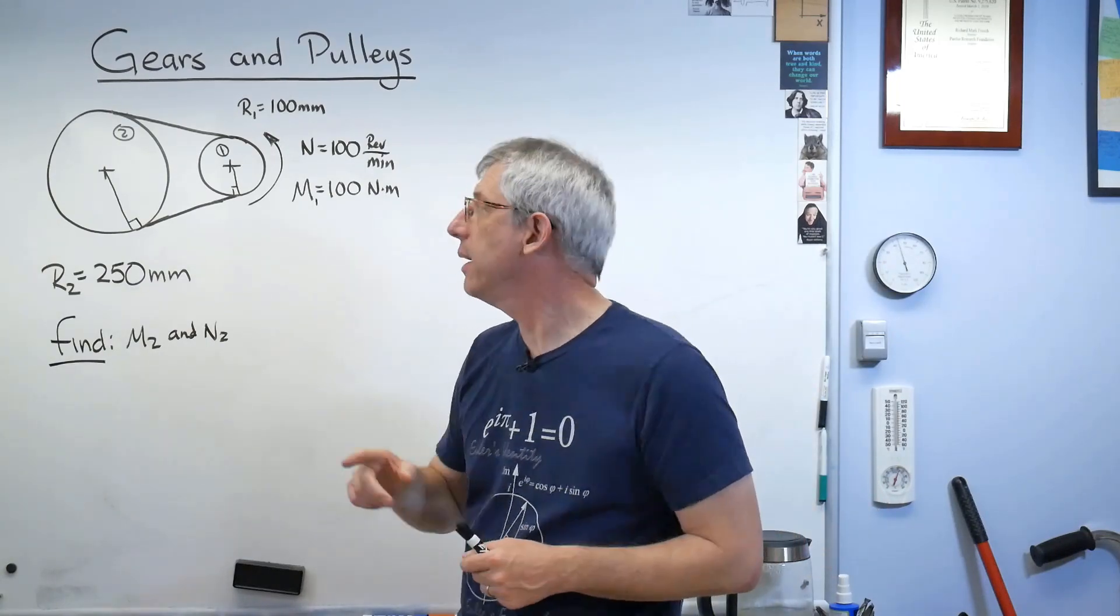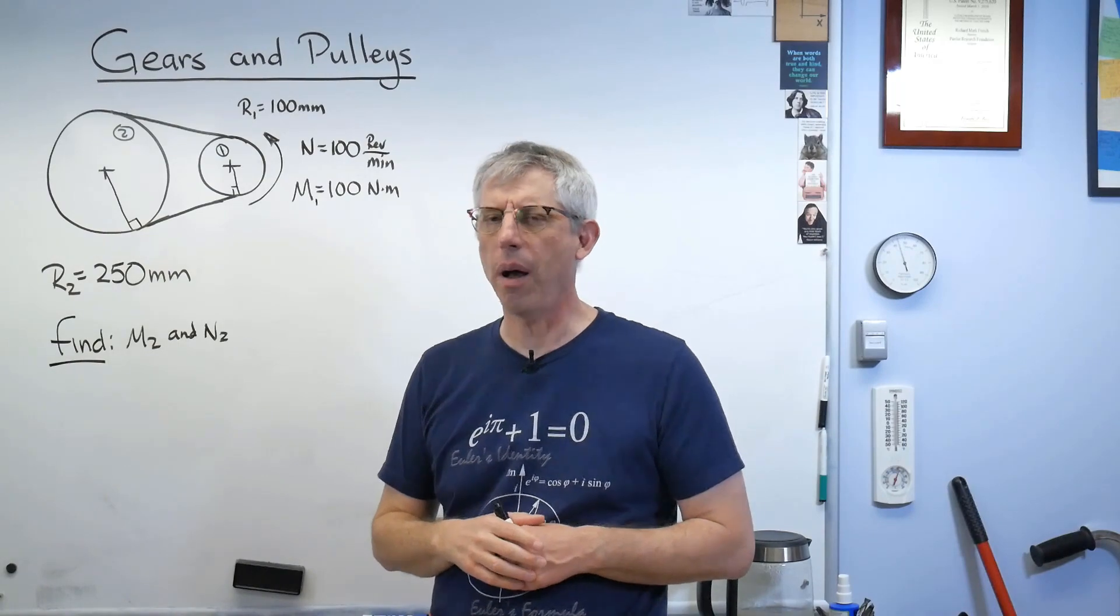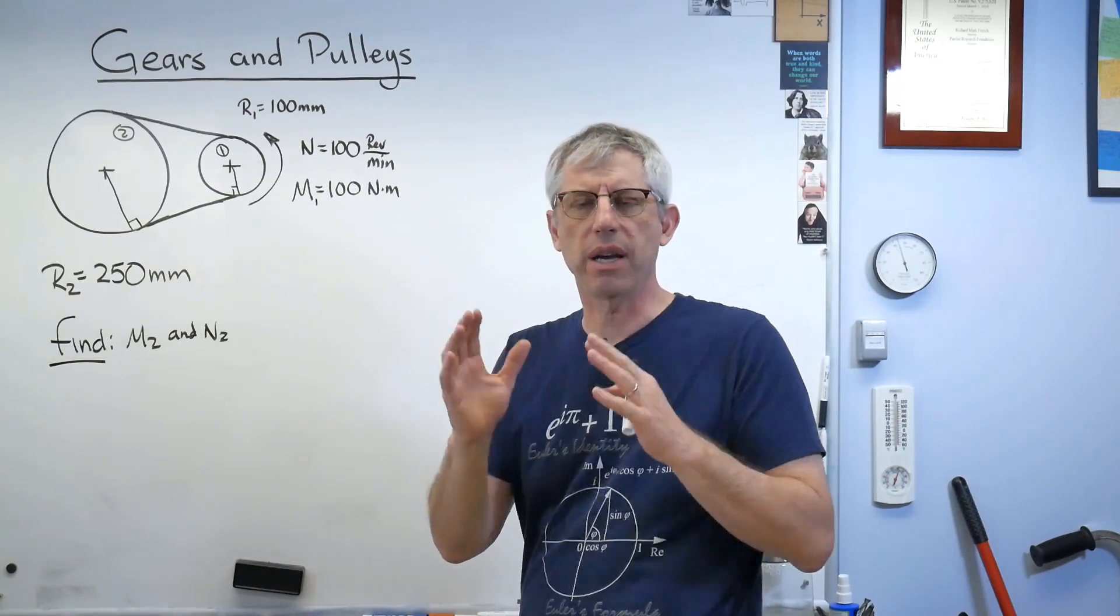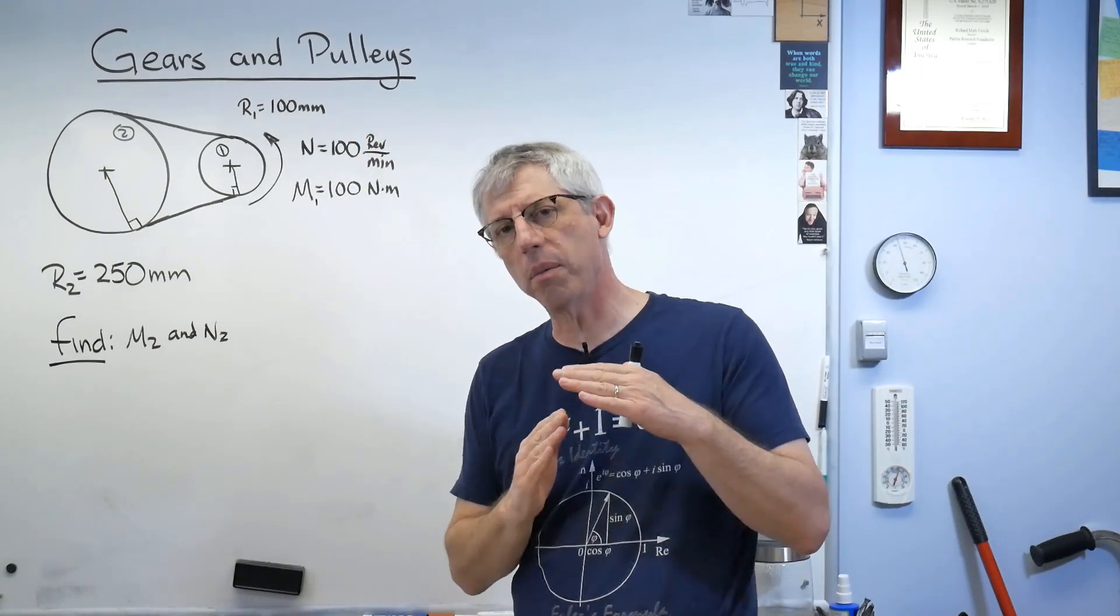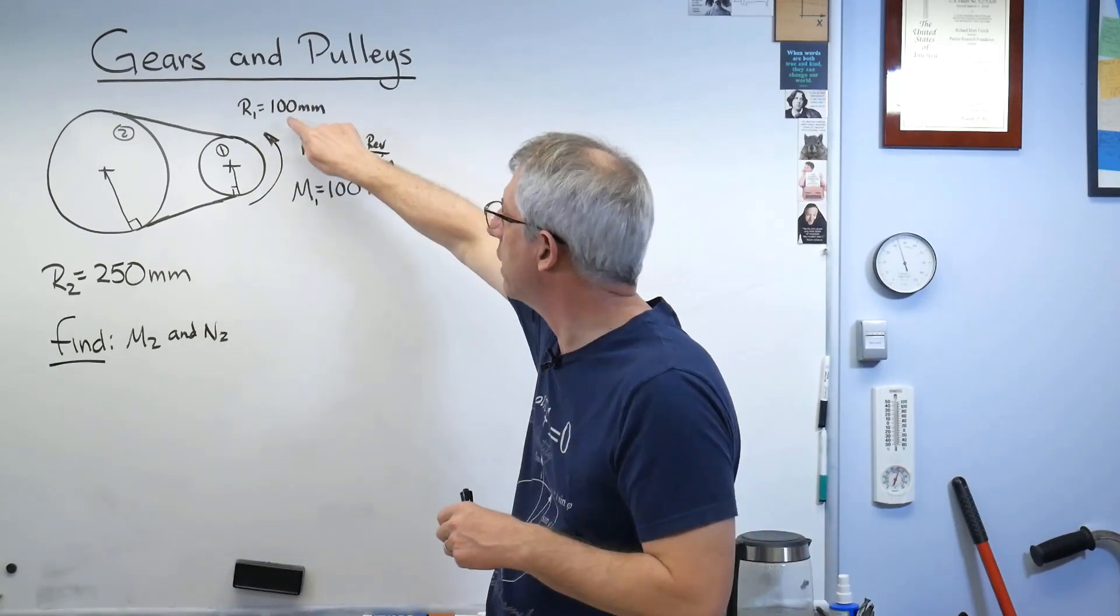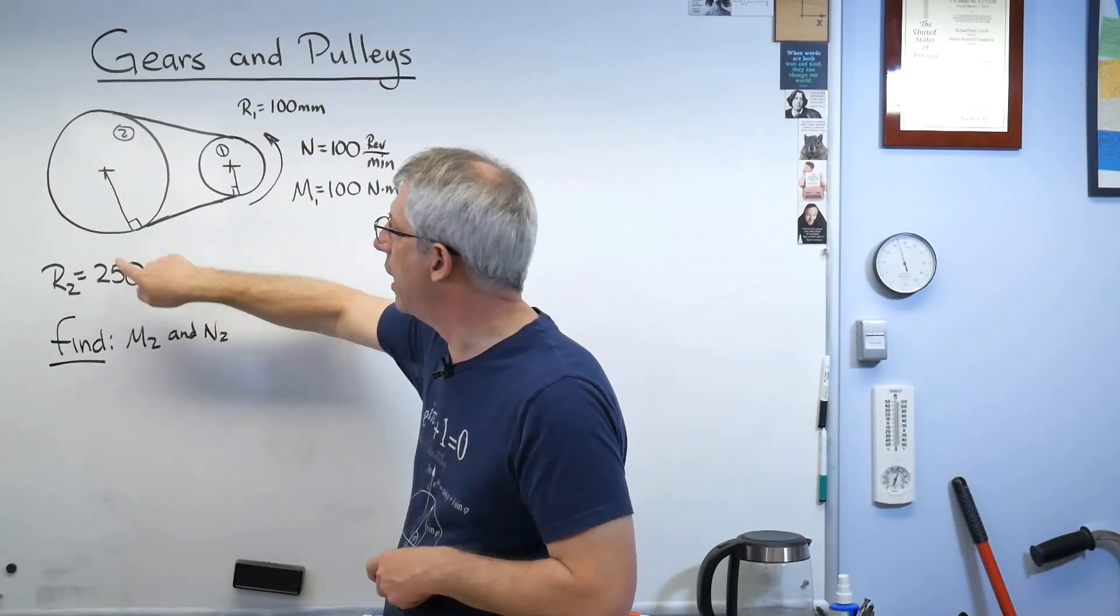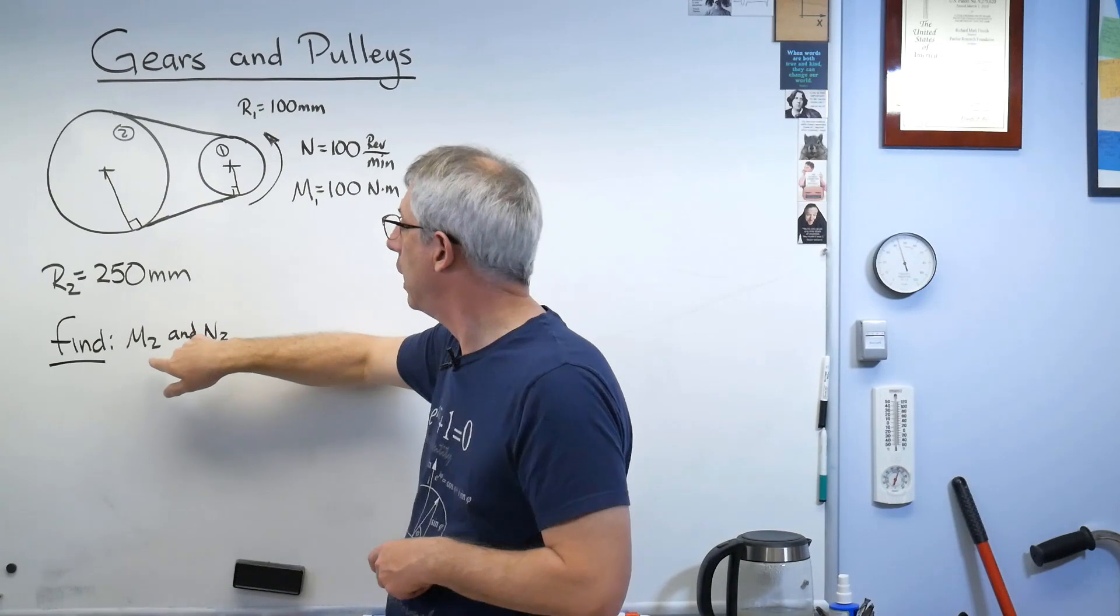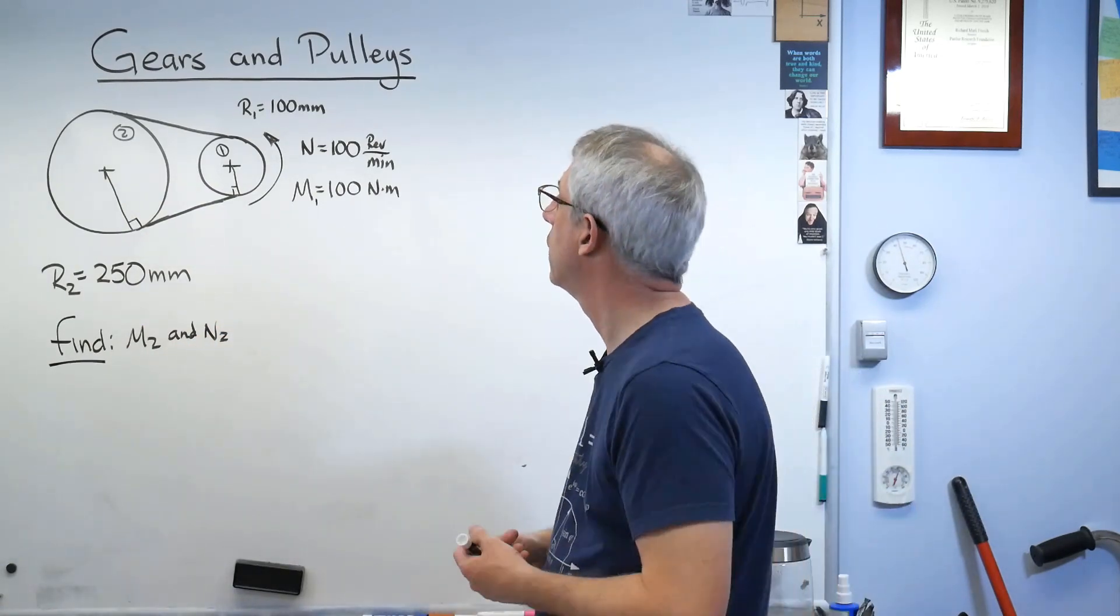So we've got 100 millimeter radius there and a 250 millimeter radius there. Now if you look at a pulley, that 100 millimeter radius and 200 millimeter diameter, the pulley's probably bigger than that. It's got some guides, some sides that kind of guide the belt. This is what we call the effective radius. That's where the belt contacts the pulley. There may be more metal outside of that, but that's the part that matters. That's the number we need. So given all this stuff, let's find M2, the moment applied back to this larger pulley, and then the speed at which that larger pulley turns.